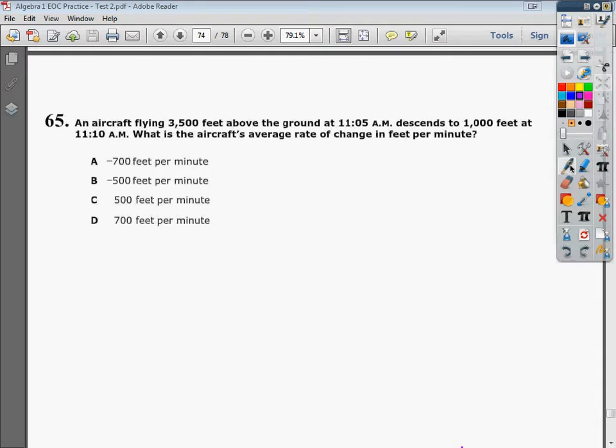The question says, an aircraft flying 3,500 feet above the ground at 11:05 a.m. descends to 1,000 feet at 11:10 a.m. What is the aircraft's average rate of change in feet per minute?